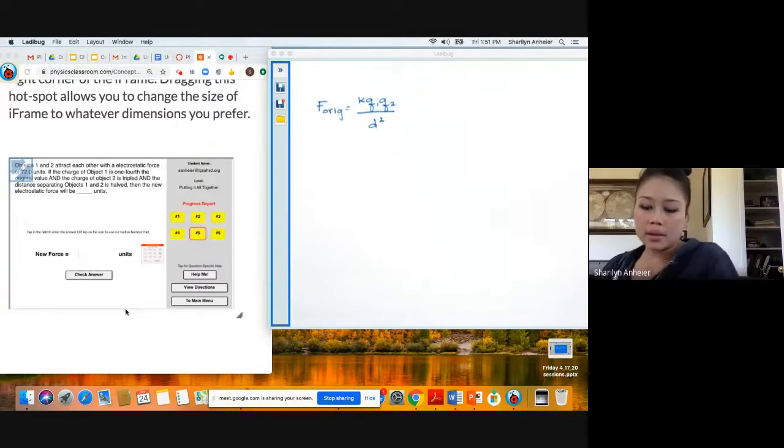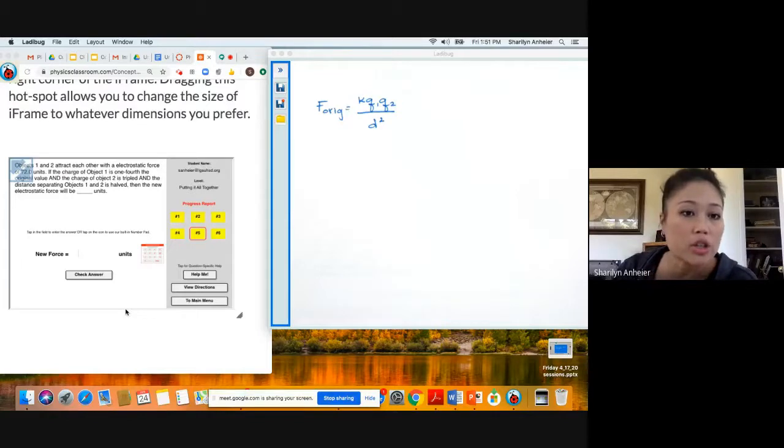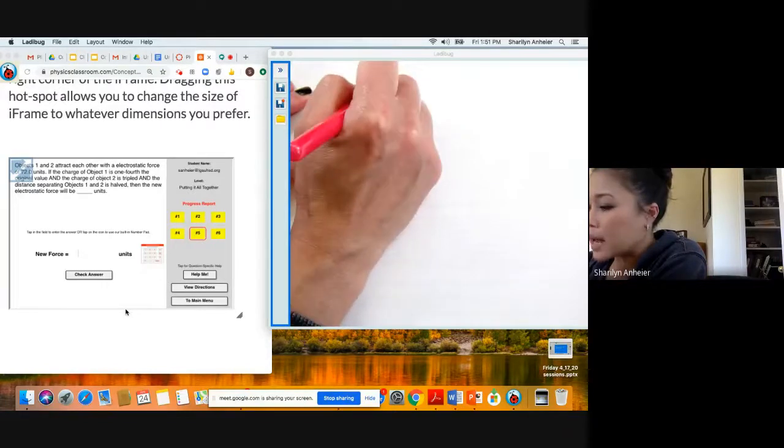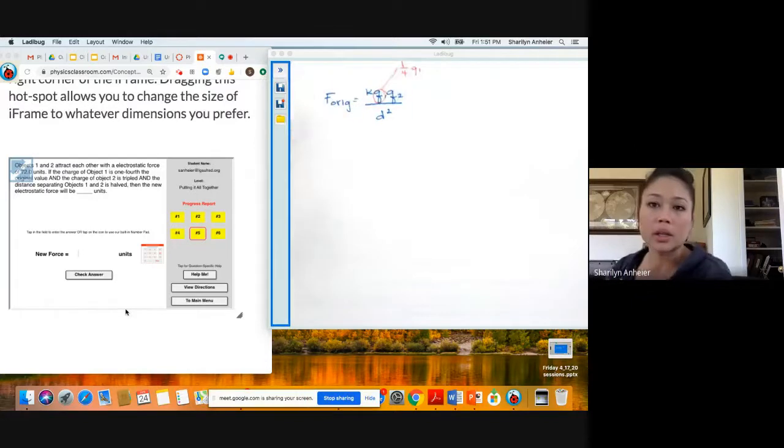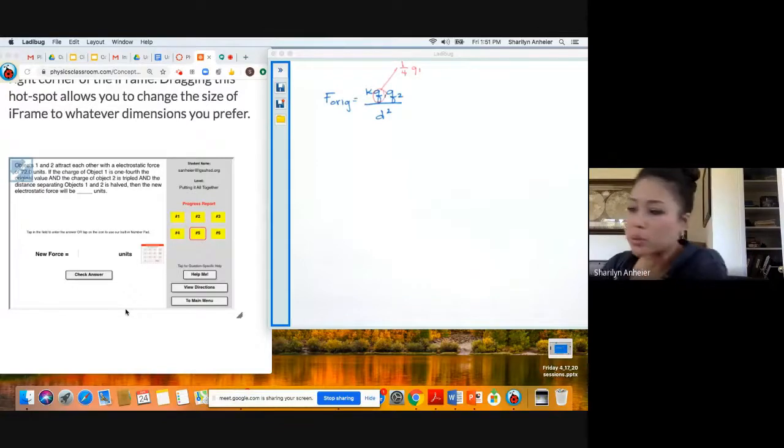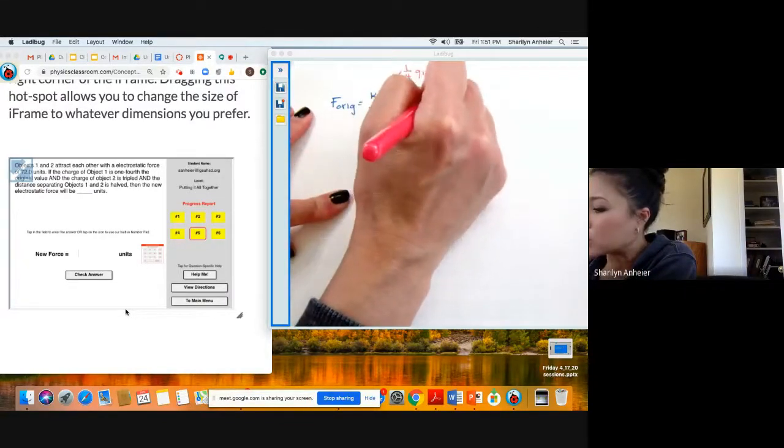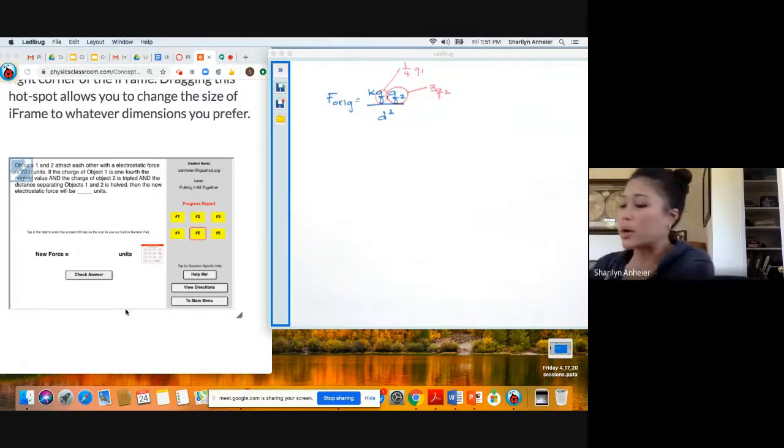And then in this problem, it tells me that the charge of object one is one-fourth the original value. So I'm going to take Q1 and I'm going to write one-fourth Q1. And then it tells me that the charge of object two is tripled. So this one is going to be three times Q2. And the distance separating object one and two is half.